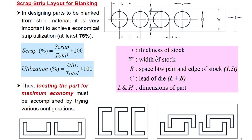Herein, there are a few basic terminologies which we need to know: t stands for thickness of the stock, W stands for width of the stock, B stands for space between part and edge of the stock, 1.5t, C is lead of die which is L plus B, and L and H are dimensions of the part.